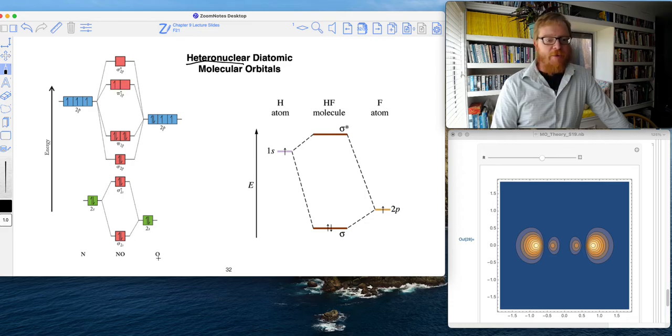But what you can see here, one example I have up here is NO. And if we were to go and do the Lewis structure of NO, we would find that it's a radical. It's got one unpaired electron.